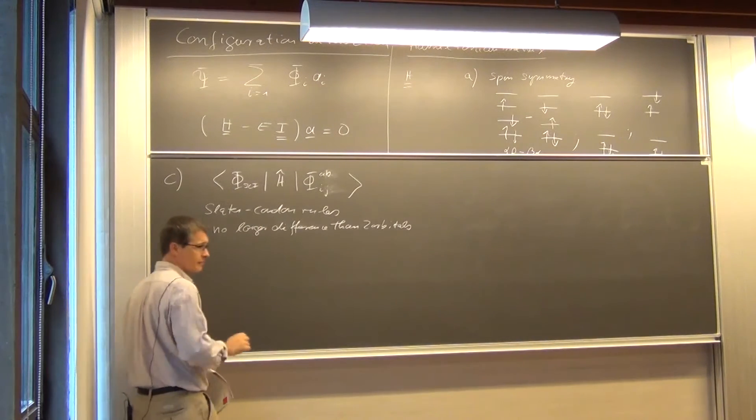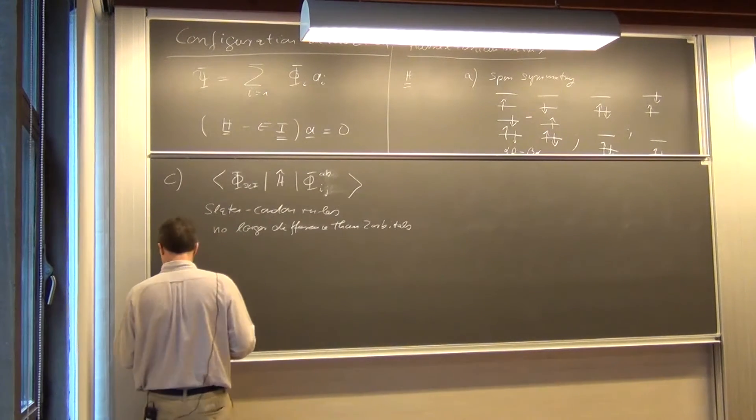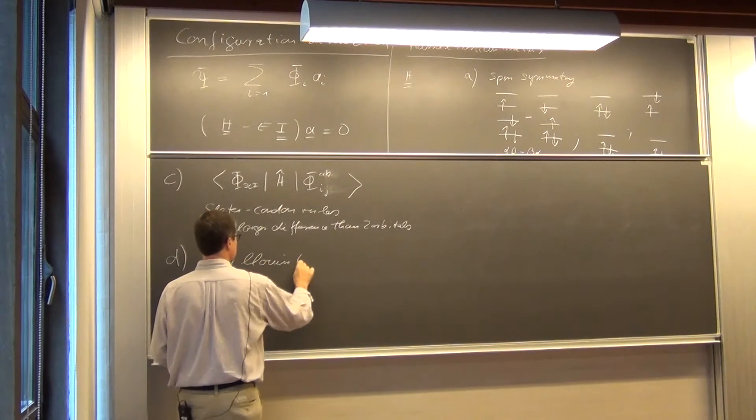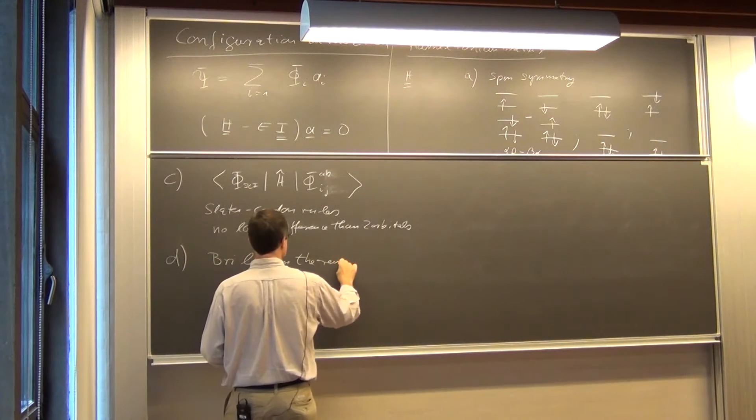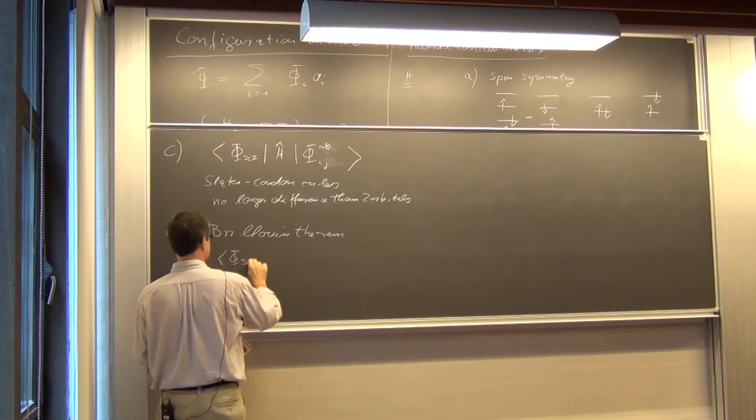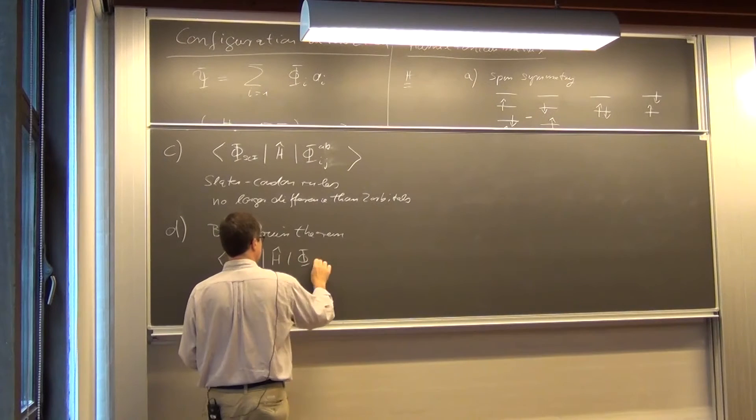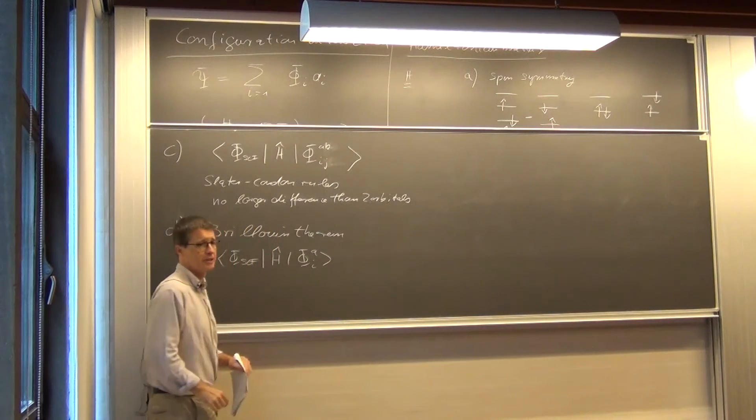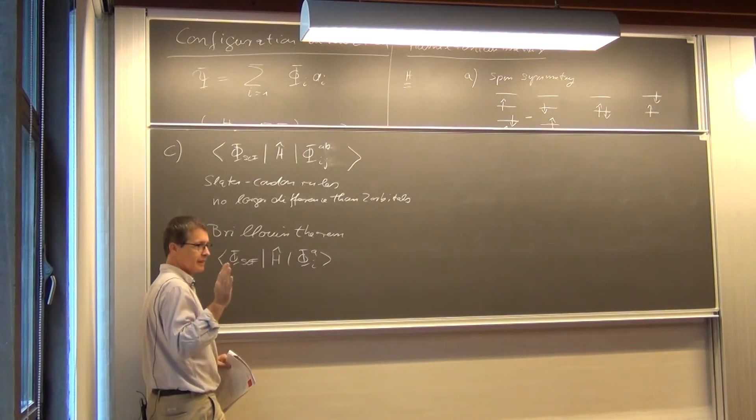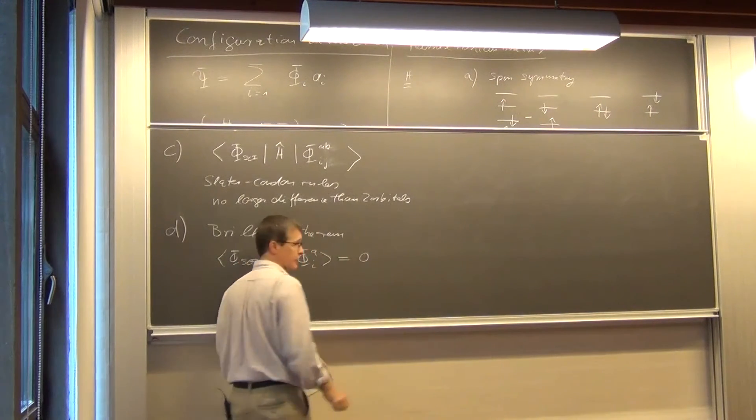And then finally, there's one other thing, which is called the Brillouin theorem. Which tells us that if you have here the SCF, self-consistent field or Hartree-Fock determinant, and we have a single excited determinant, and the orbitals we use, they are really the eigenfunctions to the SCF operator, then this is actually zero.